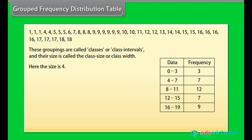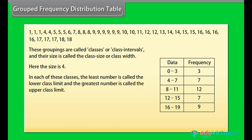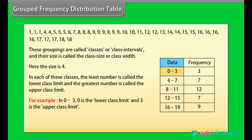Here the class size is 4. In each class, the least number is called the lower class limit and the greatest number is called the upper class limit. For example, in 0 to 3, 0 is the lower class limit and 3 is the upper class limit. These kinds of tables are called grouped frequency distribution tables.